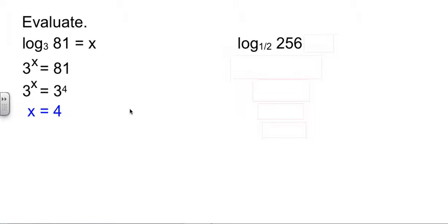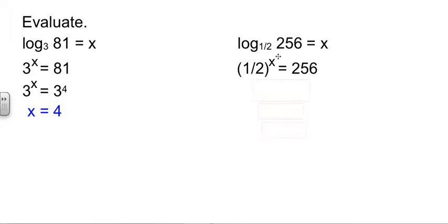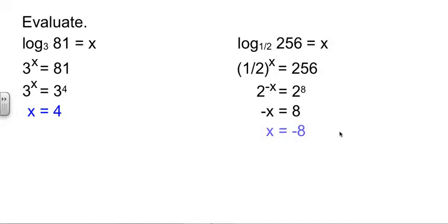Let's tangle with a little bit trickier one. We have log base 1/2 of 256. I'm going to put an equals x on the end of it, then turn it into an exponential equation. So the base, 1/2, to the x power, equals 256. Playing around with my 256, I find out that 256 is 2 to the 8th power — I just sat there with the calculator and went 2 times 2 times 2 until I got to 256 and counted how many 2's I had. 1/2 is a negative power, so I have 2 to the negative x. Now those cancel, giving me negative x equals 8, so x is negative 8.